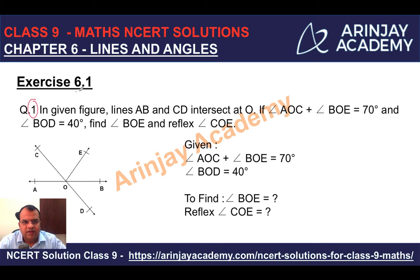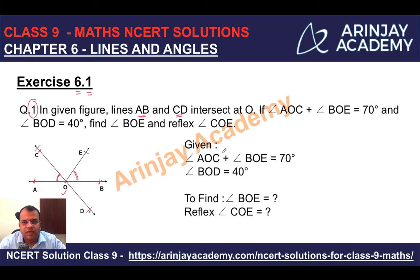Let's look at question number 1 of exercise 6.1. In the given figure, lines AB and CD — so C is here, D is here — intersect, meaning they meet at point O. Angle AOC plus angle BOE is equal to 70 degrees. So angle AOC will be this angle and angle BOE will be this angle. These two angles together equal 70 degrees. And angle BOD is equal to 40 degrees — this particular angle you are given is 40 degrees.